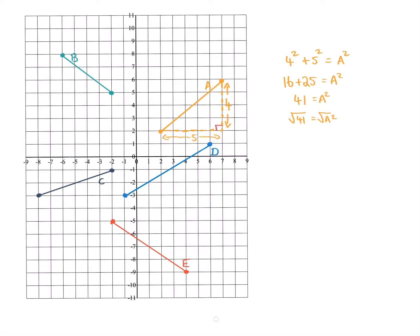Now, the square root, this little tick sign, that is the opposite of the little two. It's the opposite of squared. So they cancel each other out. That means that we're left with the square root of 41 equals A.